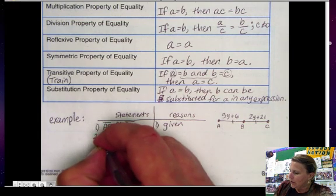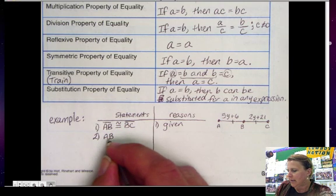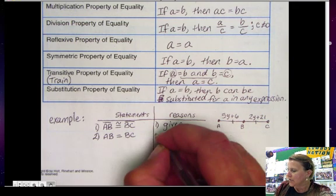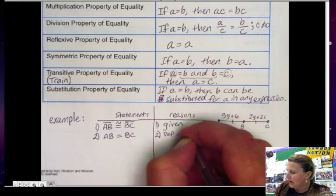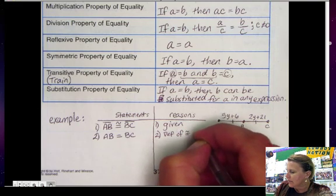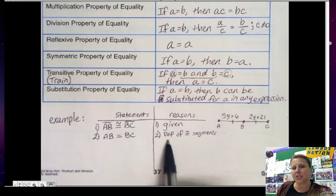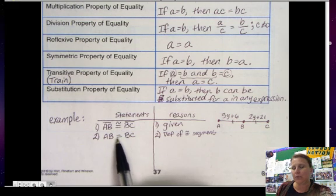Okay. We then can know that AB the segment or the AB length is equal to BC length. And I'm just going to tell you what that is. That's the definition of congruent segments. So you're allowed to use definition of congruent segments to go back and forth between congruence and equals.